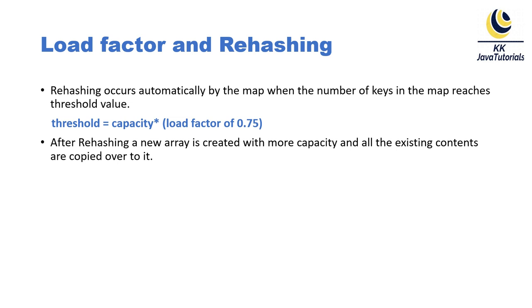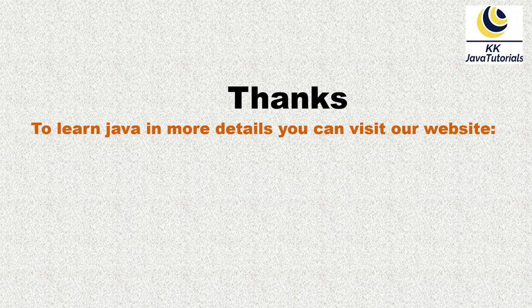After rehashing, a new array is created with more capacity, and all the existing contents are copied over to it. That is basically how rehashing happens. The consequence is that a new internal array is created and all existing elements are copied to the new array.